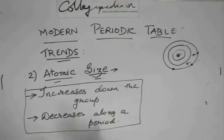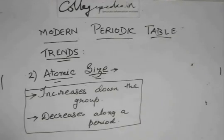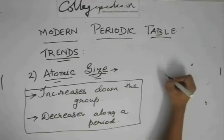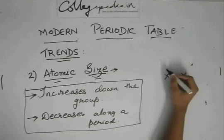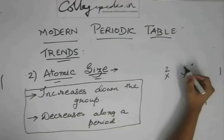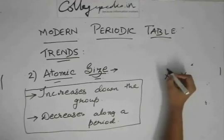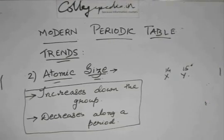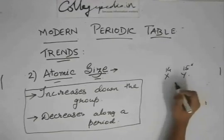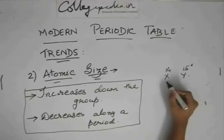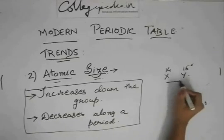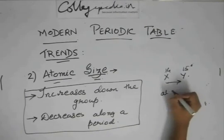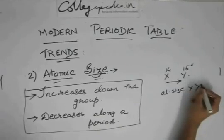They will ask you questions like: X and Y belong to the same period. X belongs to group 2, Y belongs to group 14 or 15 — whose atomic size will be greater? Atomic size decreases along a period, so from X to Y the atomic size will decrease. Therefore, the atomic size of X will be greater than Y.